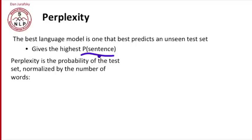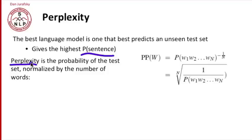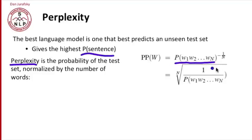Perplexity is the probability of the test set normalized by the number of words. If our test set is a sentence n words long, we take the probability of that n-word sentence, take the nth root, and take the inverse of it. It's a way of normalizing for the length of the sequence, because obviously longer sentences will have lower probability. We want a normalizing factor so we can compare test sets of different lengths. The perplexity of a string of words W is the nth root of one over the probability of the string of words.